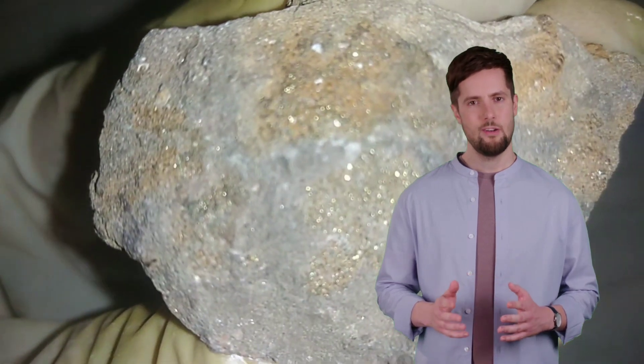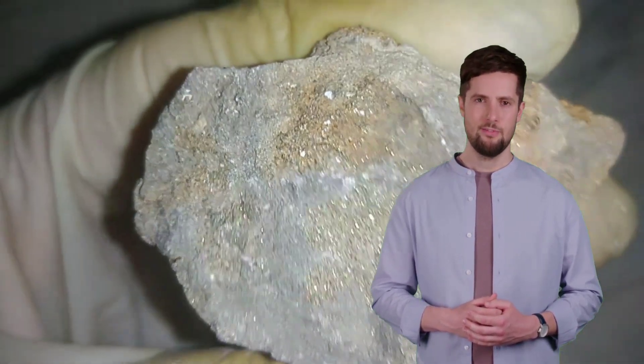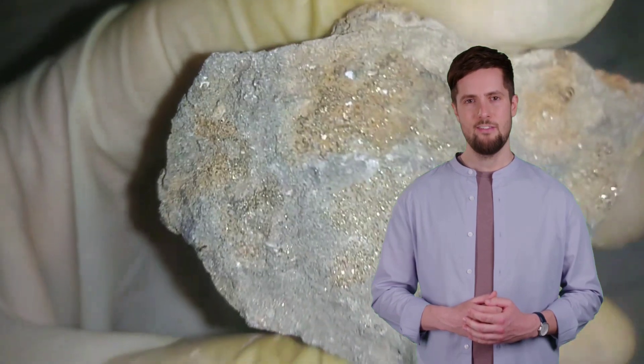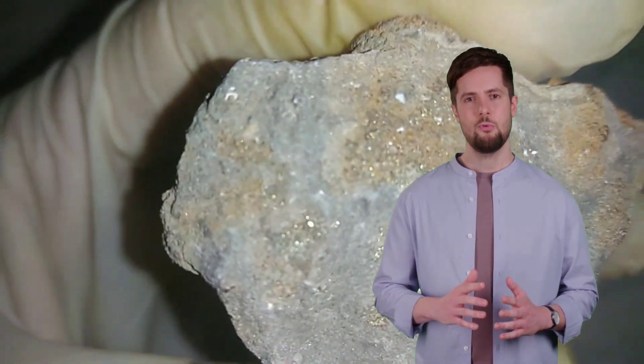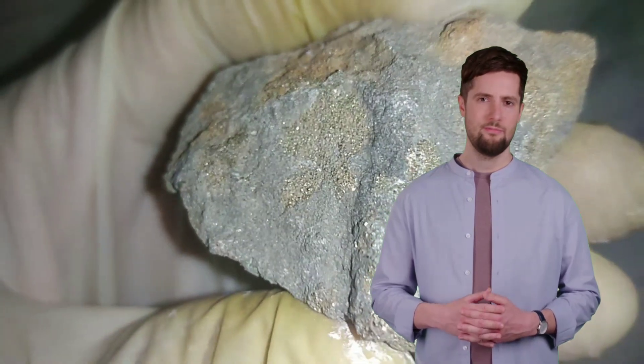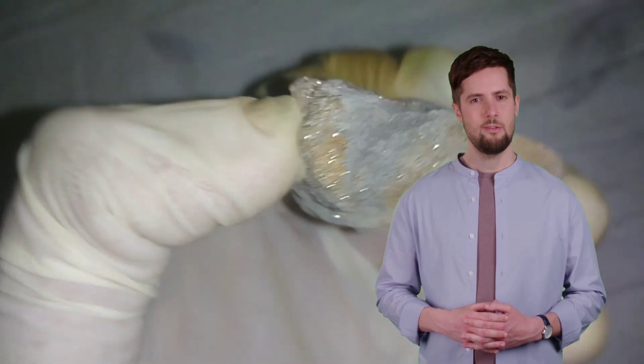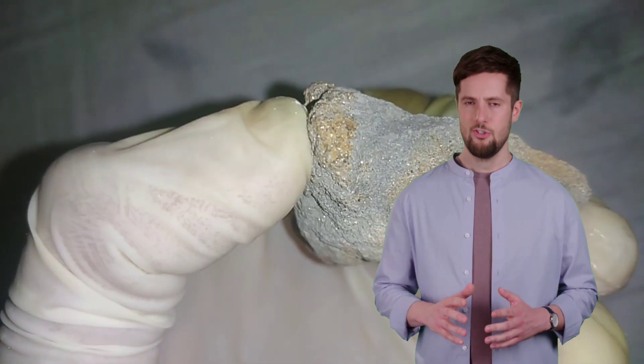Cyanidation is a widely used method for extracting gold from ores and concentrates. In this process, the crushed and ground rock is mixed with a dilute solution of sodium cyanide or potassium cyanide. The cyanide solution reacts with the gold particles, forming soluble complexes. These complexes can then be separated from the rest of the rock material, and the gold can be subsequently recovered from the solution.